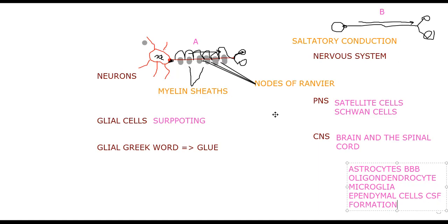Moving to neurons: neurons can be classified in three ways. First, by the number of dendrites or poles — multipolar, bipolar, or unipolar. Second, by the information they send — sensory or motor neurons. Third, by length — Golgi type one (longer) or Golgi type two (shorter).